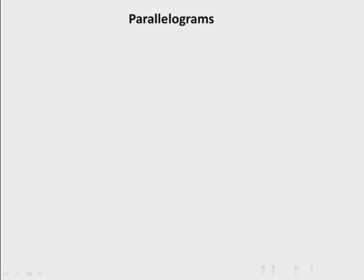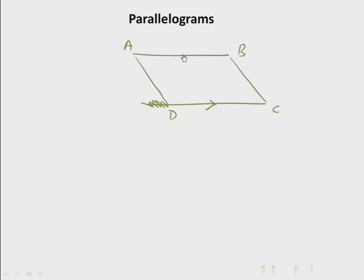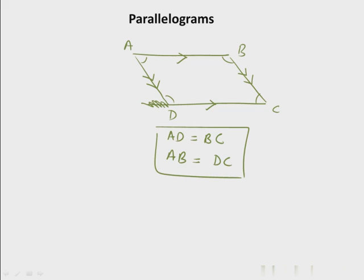The next important quadrilateral is a parallelogram — essentially a shape made up of two pairs of parallel lines. In parallelogram ABCD, sides CD and AB are parallel, and sides AD and BC are parallel. Consequences of both pairs of opposite sides being parallel include: opposite angles become equal, and opposite sides become equal in length. AD = BC and AB = DC. A rectangle is a particular case of a parallelogram.